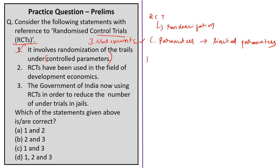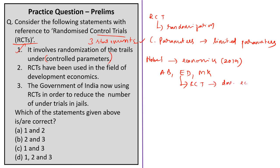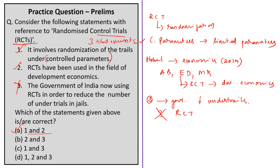The Nobel Prize for Economic Sciences in 2019 was awarded jointly to Abhijit Banerjee, Esther Duflo and Michael Kramer for their experimental approach to alleviate global poverty, introducing RCT in development economics — thus the second statement is also correct. The third statement, claiming the government of India is using RCTs to reduce the number of trials in jails, is incorrect and meant to confuse. Therefore, option A — statements one and two only — is correct.